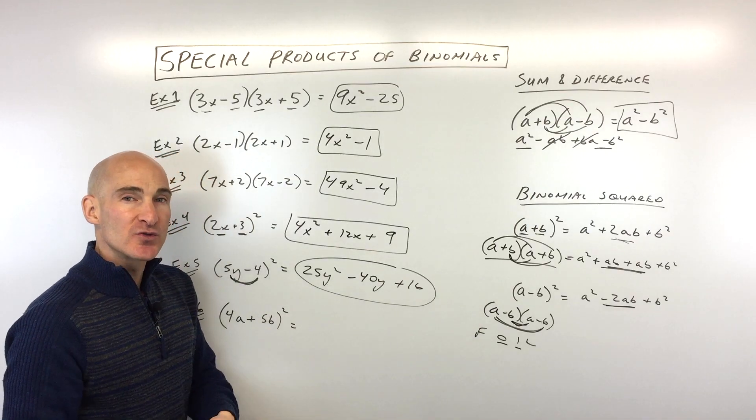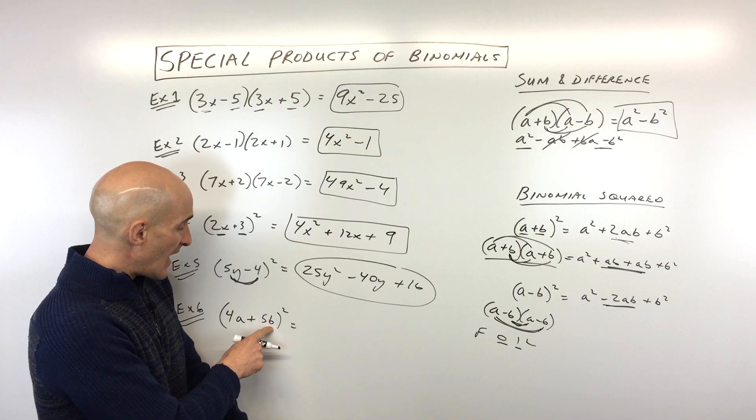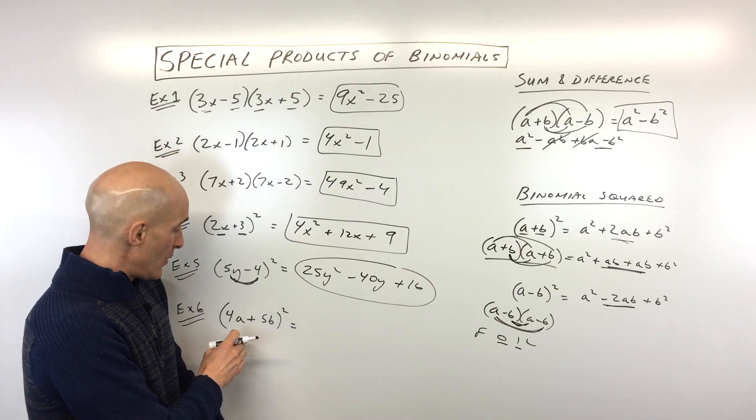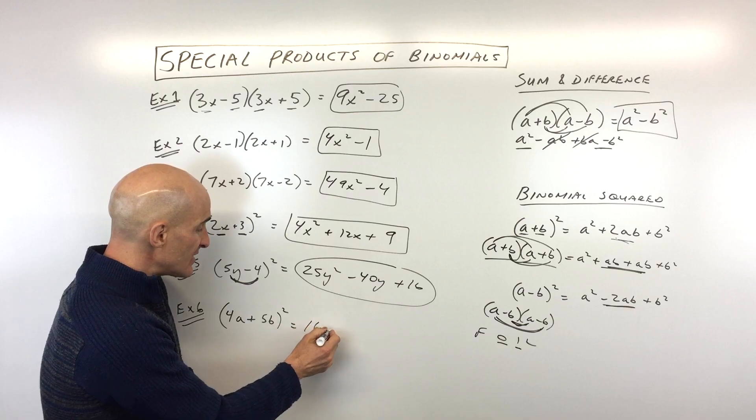Last example. See if you can do this one on your own. 4a plus 5b, the quantity squared.